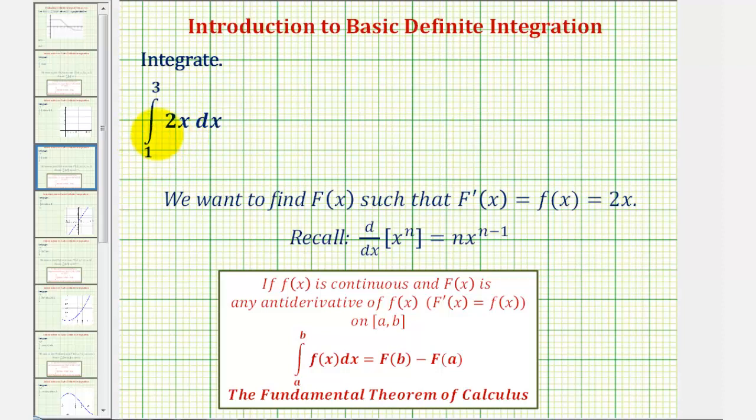We want to integrate 2x from 1 to 3 using the fundamental theorem of calculus, which states that if f(x), our integrand, is continuous and F(x) is any antiderivative of f(x), meaning the derivative of F(x) equals f(x) on the closed interval, we can evaluate this integral here